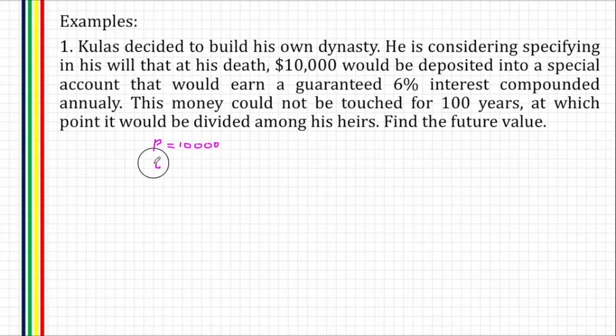The term or the number of years is 100 years. Then the rate, or I, is 6% compounded annually. So that is 0.06.